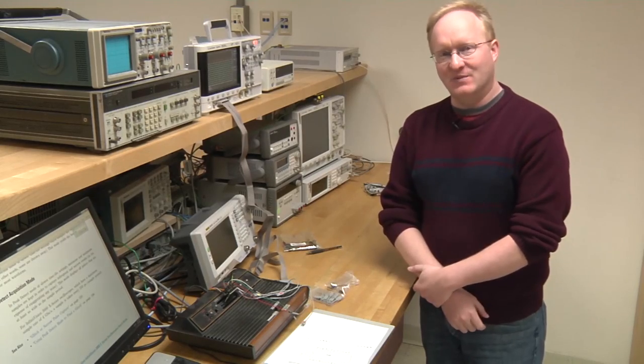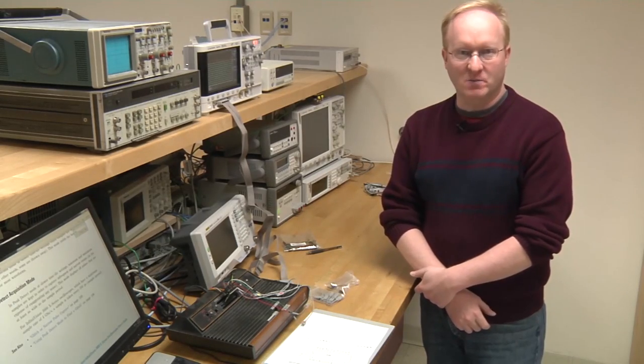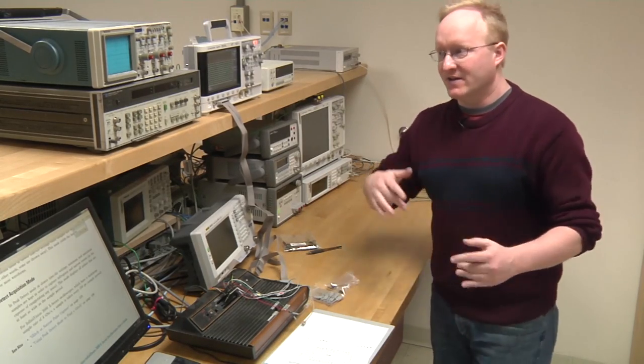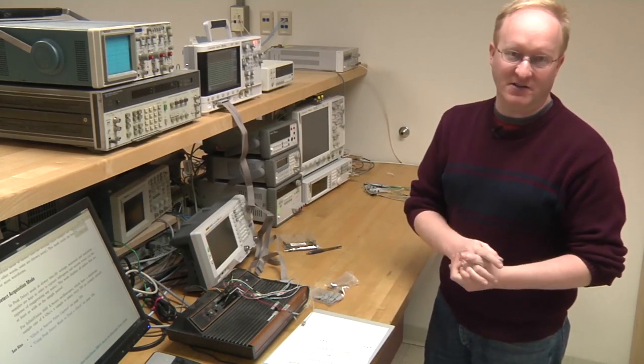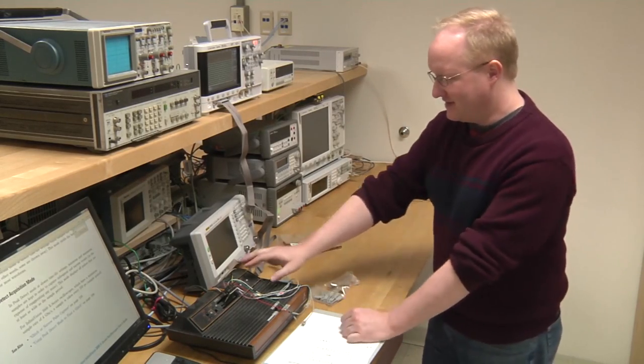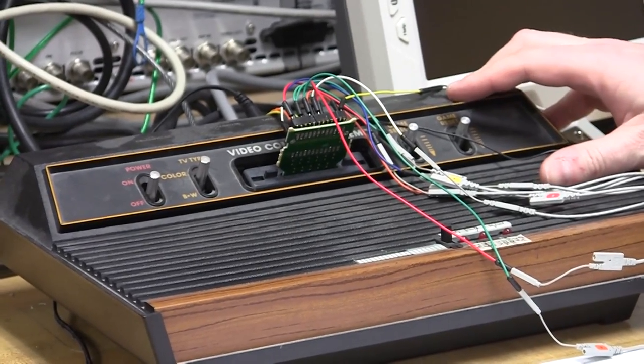Our third and final example is going to be using an oscilloscope for logic analysis. So instead of like looking at a couple channels, we're going to be looking at an entire bus. The example we'll use is this Atari 2600 game console.